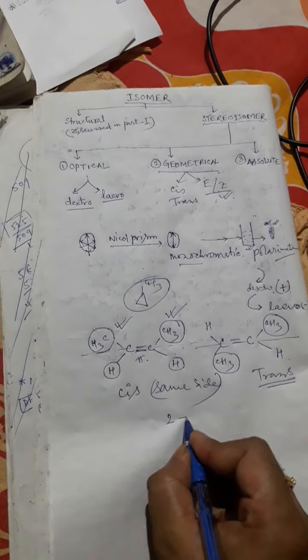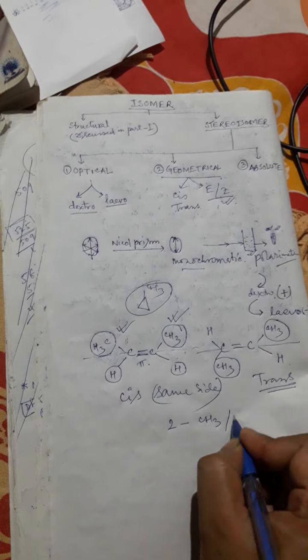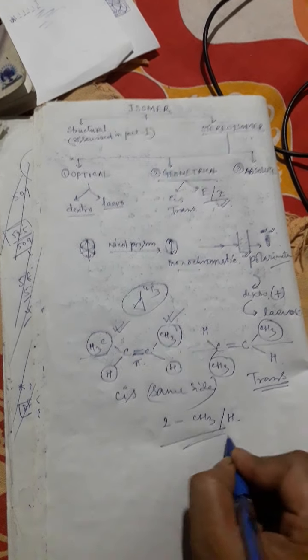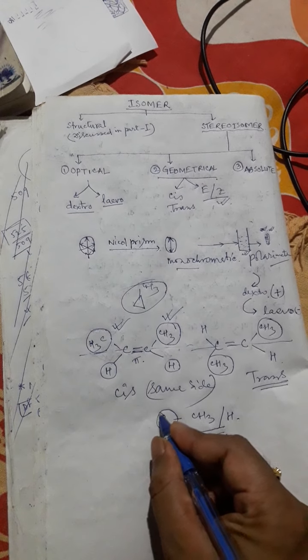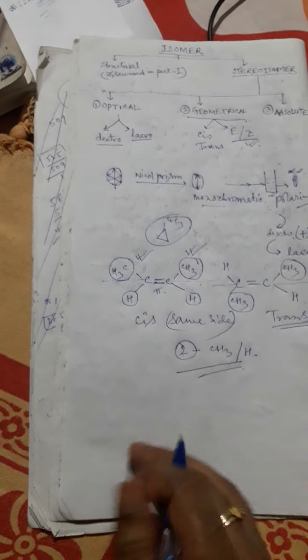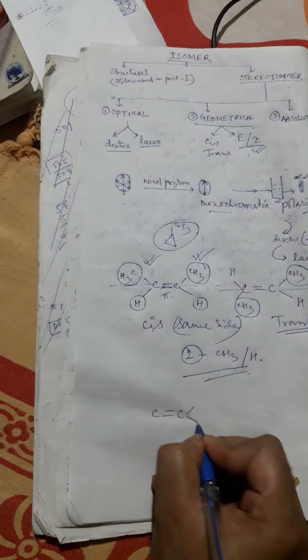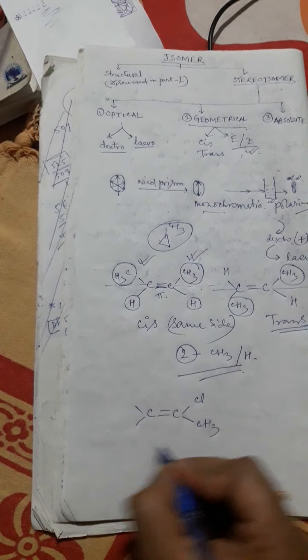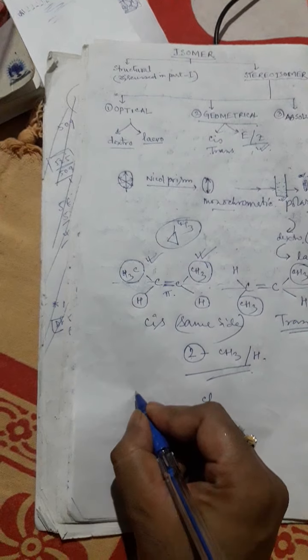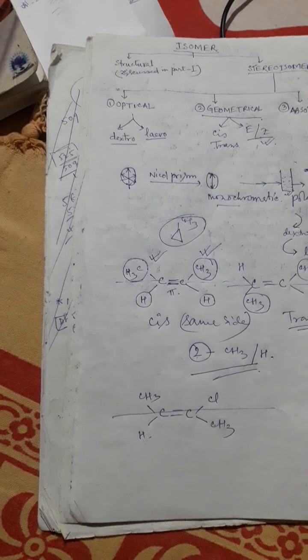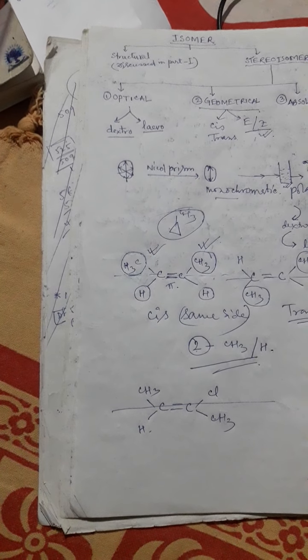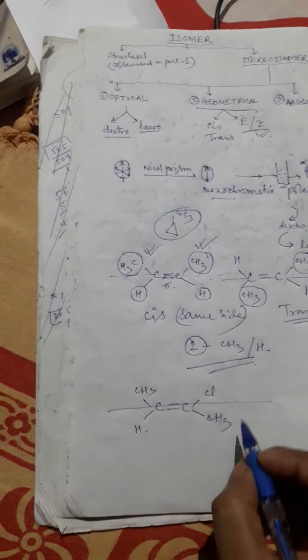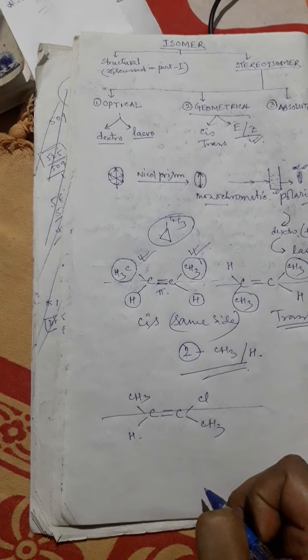Now, in the case of cis and trans, the criteria is that there should be two different groups — one is a CH3 group and the other is H. But when more than two different groups are present, then cis/trans is not applicable. In that case, the zusammen and entgegen system is used. For example, suppose we have Cl, CH3, H, and CH3. This cannot be categorized as cis or trans; it must be categorized as entgegen or zusammen.